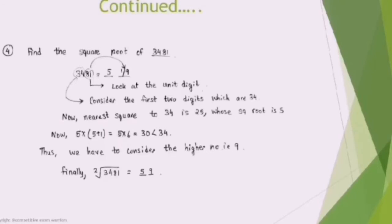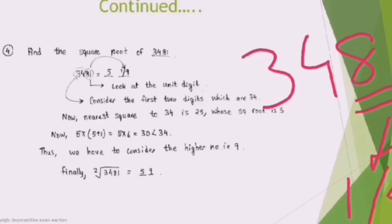Another example, this will be the last example of this topic. You need to find the square root of 3481. Similarly, look at the last two digits, 81. It will be either 1 or 9 according to the chart. Now let's look at 34, nearest square of 34 is 25, square root is 5. The answer will be either 51 or 59.